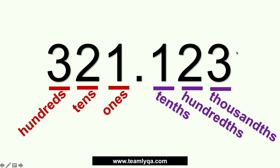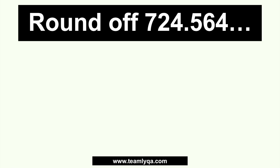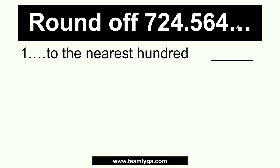Now that you know that, it's easier for us to proceed to the rounding off lesson. Let's talk about this: we have a number right here, 724.564. In the exam, you may encounter questions like: round off 724.564 to the nearest hundred. The rule is that if the number sa right is lower than 5 — so you have 4, 3, 2, 1, or 0 — then you will round down. And if it's 5, 6, 7, 8, or 9, you will round up.